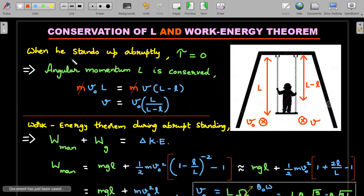When he stands up abruptly during that particular standing process, the torque of all the forces acting on the system will pass through the support, so the value of the torque would be equal to zero. The forces pass through the support, therefore torque is equal to zero, and during this small period of standing up, angular momentum of the system about the support is conserved.